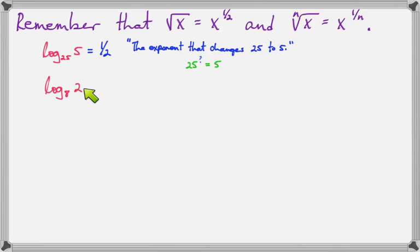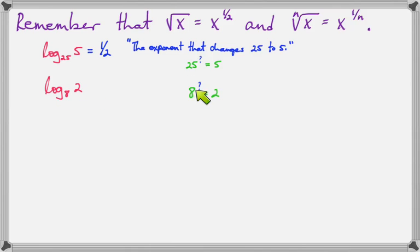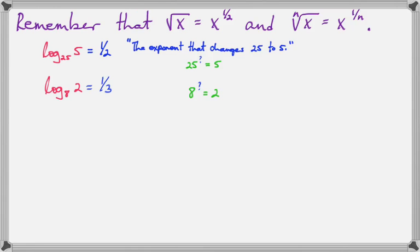Log base 8 of 2. We're trying to think of 8 to what power equals 2. In other words, the exponent that changes 8 into 2. Well, 8 is the third power of 2, so 8 to the 1/3 power is 2. In other words, the third root of 8 is 2. So log base 8 of 2 equals 1/3, or in other words, 8 to the 1/3 power equals 2.